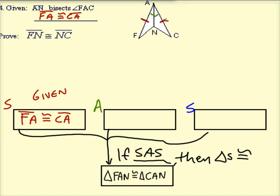The angles, the green angles, let's call them angle FAN and angle CAN. The fact that those two angles are congruent was established from this given piece of information. AN bisects angle FAC. And what does bisect mean? It means cut in half. So we need that as a statement.